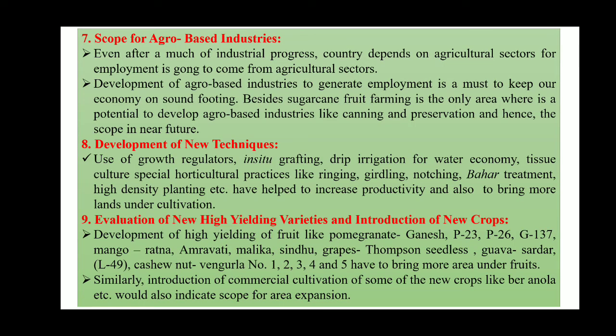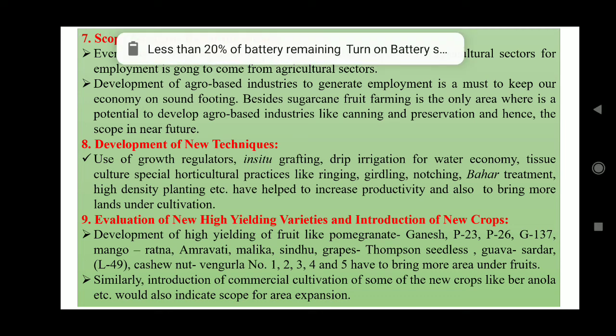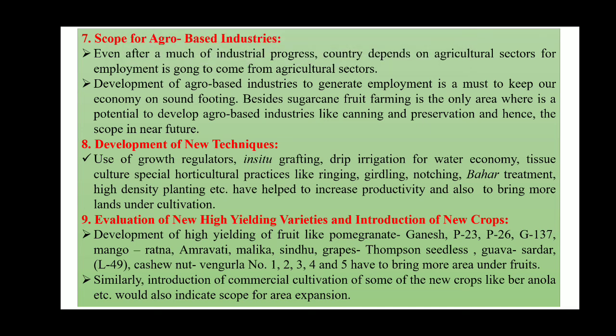Scope for agro-based industries: fruit crops are the mother of all industries, so whatever raw produce we have can be used in different industries. We can also establish industries like canning and preservation industries because of fruit crops.